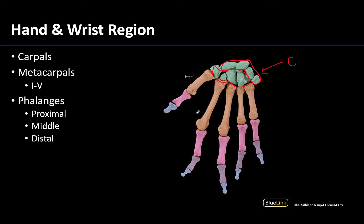Shaded in orange are the metacarpals, located in the palm region, and they are numbered one to five from lateral to medial. This stout bone here is the lateral-most and is the one associated with the thumb, so the bones associated with the thumb are numbered one and are the lateral-most.